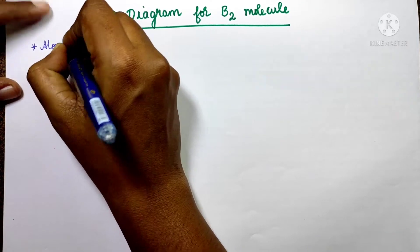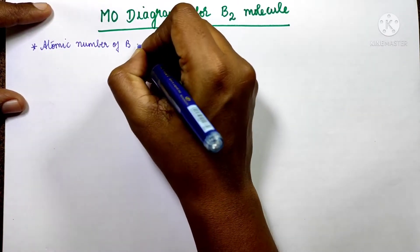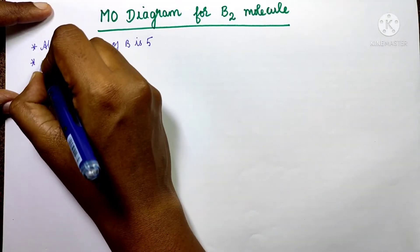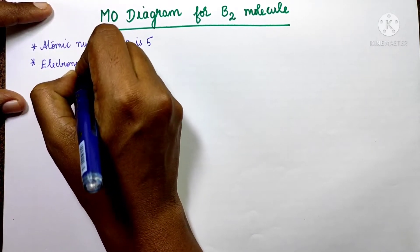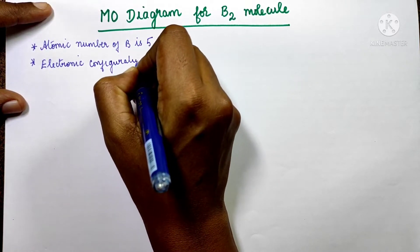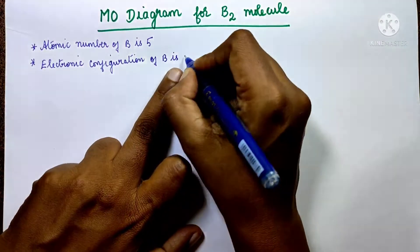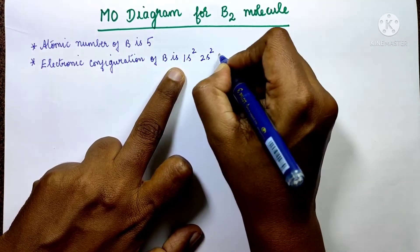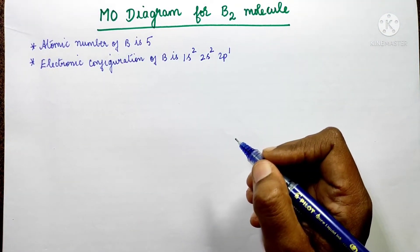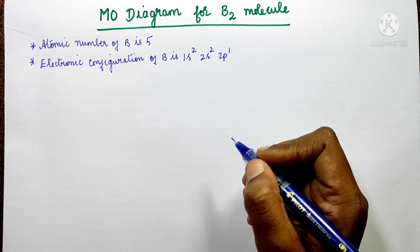Let's write the atomic number and electron configuration of boron. The atomic number of boron is 5. So the electronic configuration of boron is 1s², 2s², 2p¹.